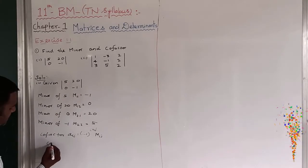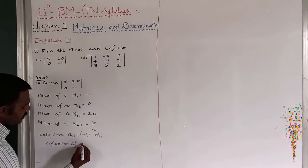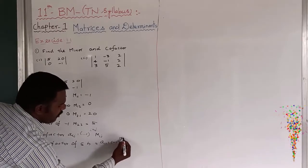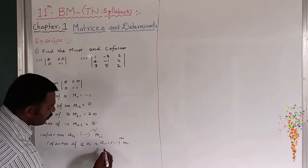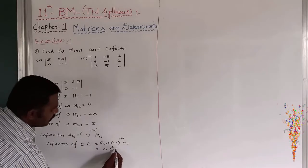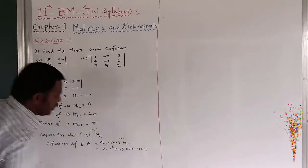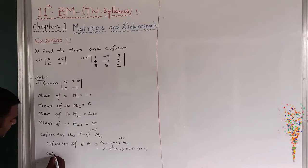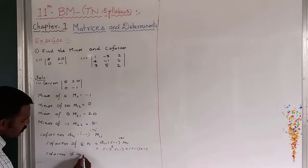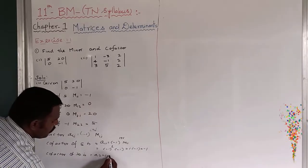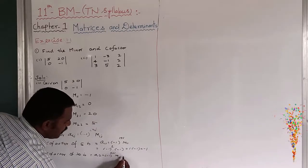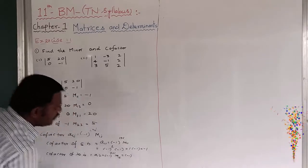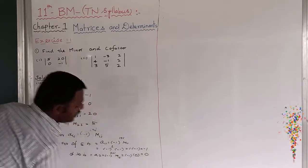Cofactor of 5 is A11 = (-1)^(1+1) × M11. Therefore, (-1)^2 = 1, and M11 is minus 1, so 1 × minus 1 equals minus 1. This is the cofactor of 5. Next, cofactor of 20 is A12 = (-1)^(1+2) × M12 = (-1)^3 = minus 1, and M12 is 0, so 0 into anything is 0.